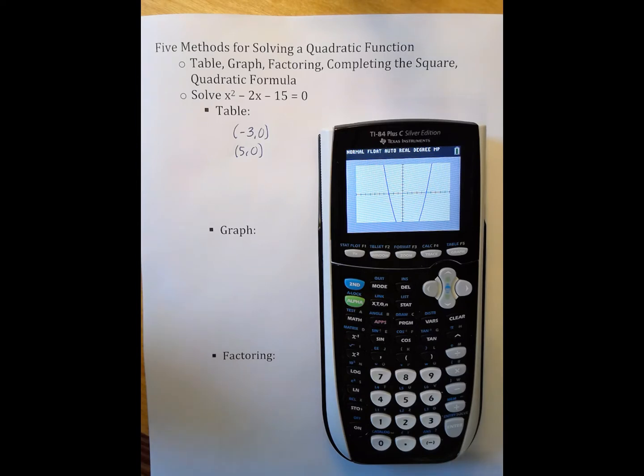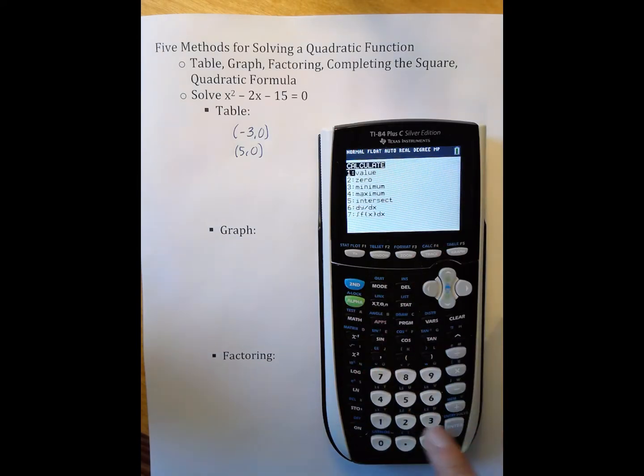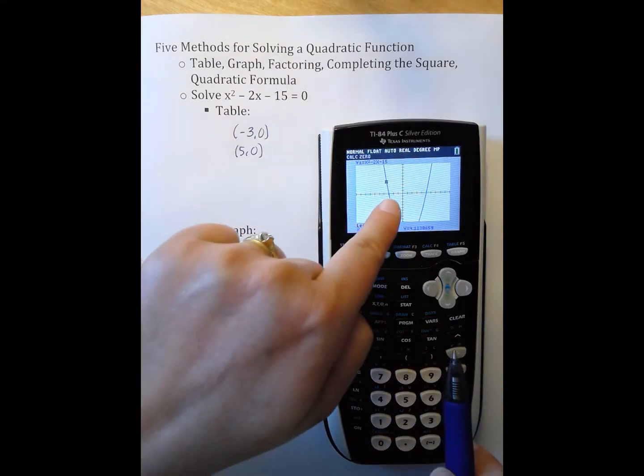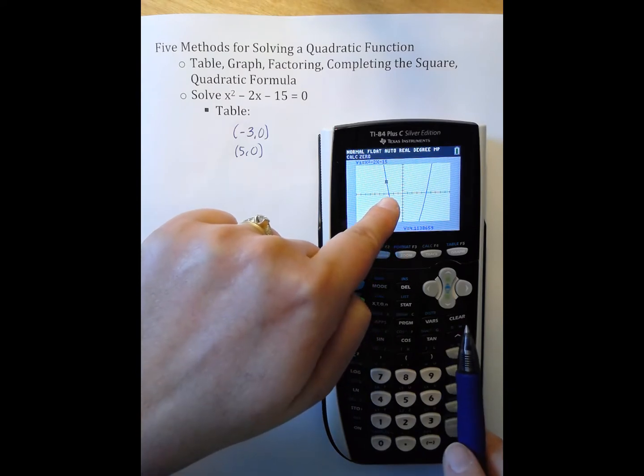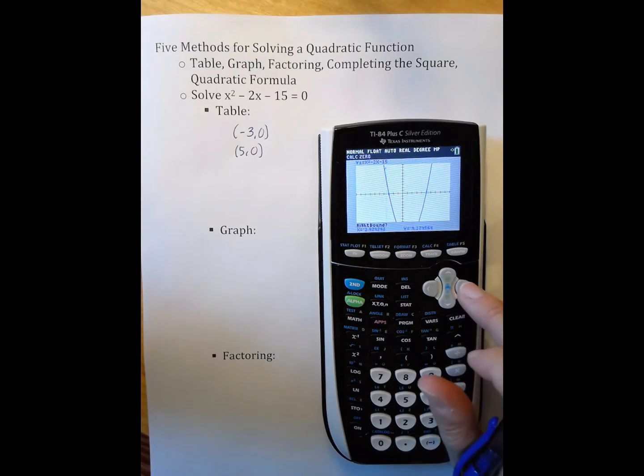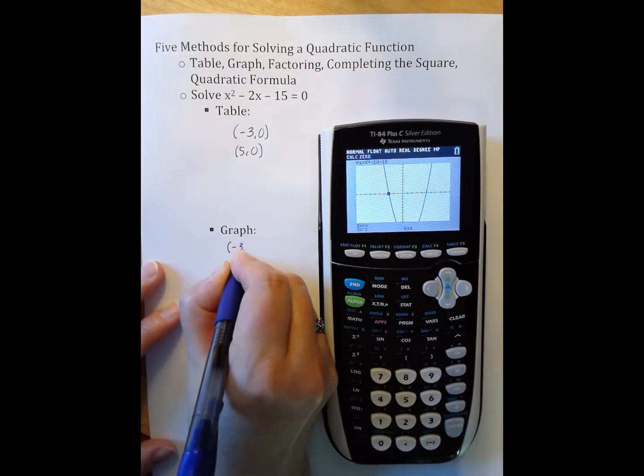There's my lovely picture of my function. And so now I have to use the method of finding the x-intercepts with the calculator. So calculate, so second trace. I'm looking for the 0 values. It's asking me to go to the left and right. So left of this most left x-intercept is kind of above it. I press enter. To the right is below it. I press enter. I don't really care about guessing, so I press enter. And there's my negative 3, 0.